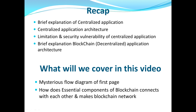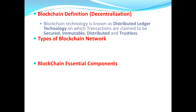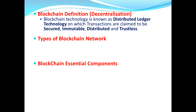Before starting, I think it's important for all of us to understand the blockchain definition, which is all over the internet. The definition says blockchain technology is known as a distributed ledger technology on which transactions are claimed to be secured, immutable, distributed, and trustless. Focus on these bold terms: distributed ledger, secured, immutable, distributed, and trustless. We'll talk about these in upcoming videos and see how blockchain components logically put together allow us to achieve all these attributes.